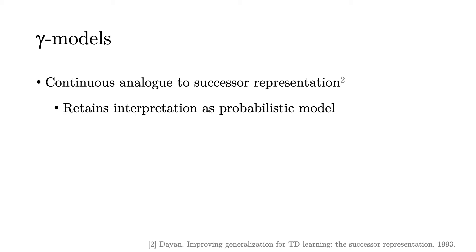The gamma model is a natural continuous analog to the successor representation that retains an interpretation as a probabilistic model. It is a hybrid between model-free and model-based mechanisms.